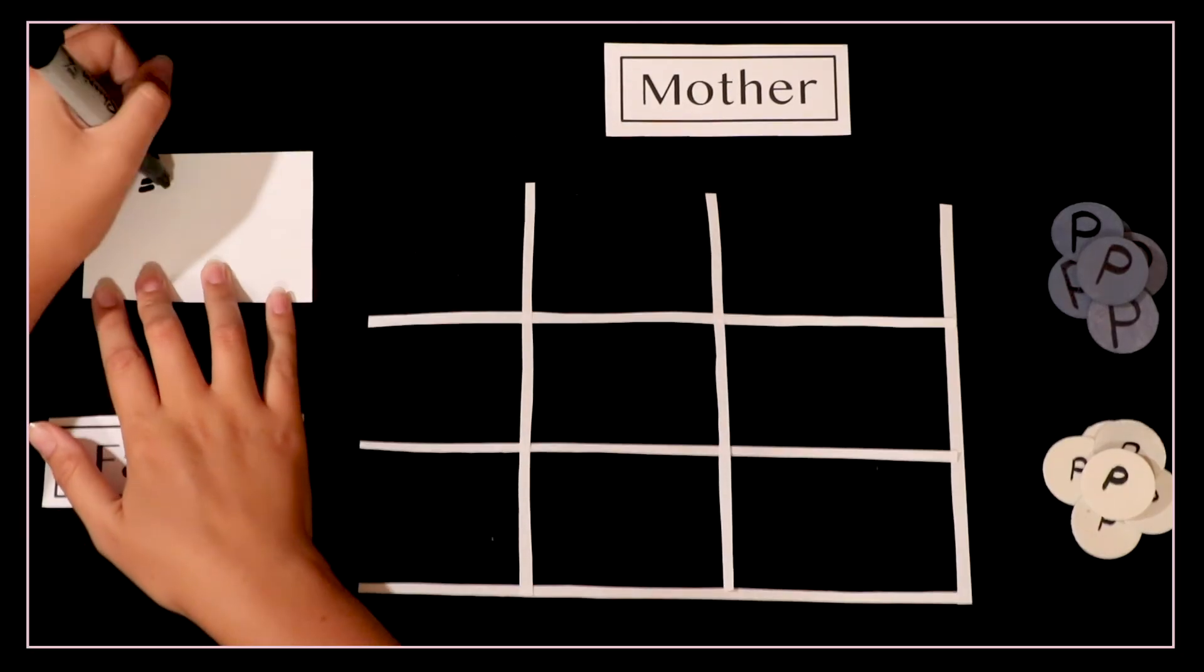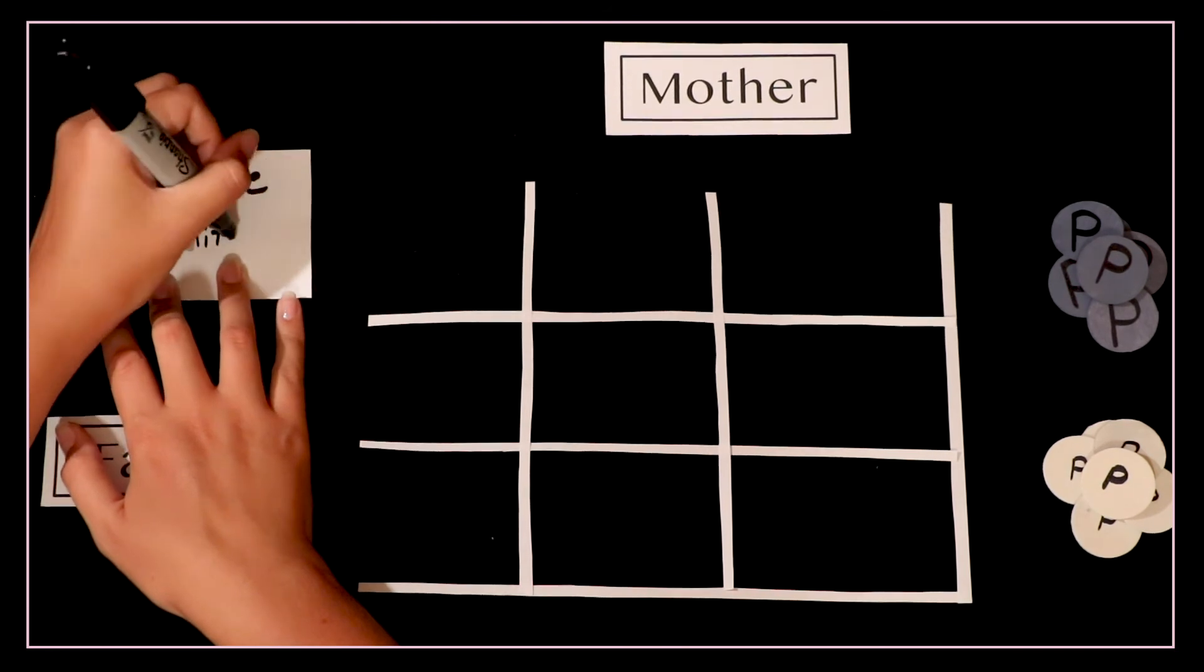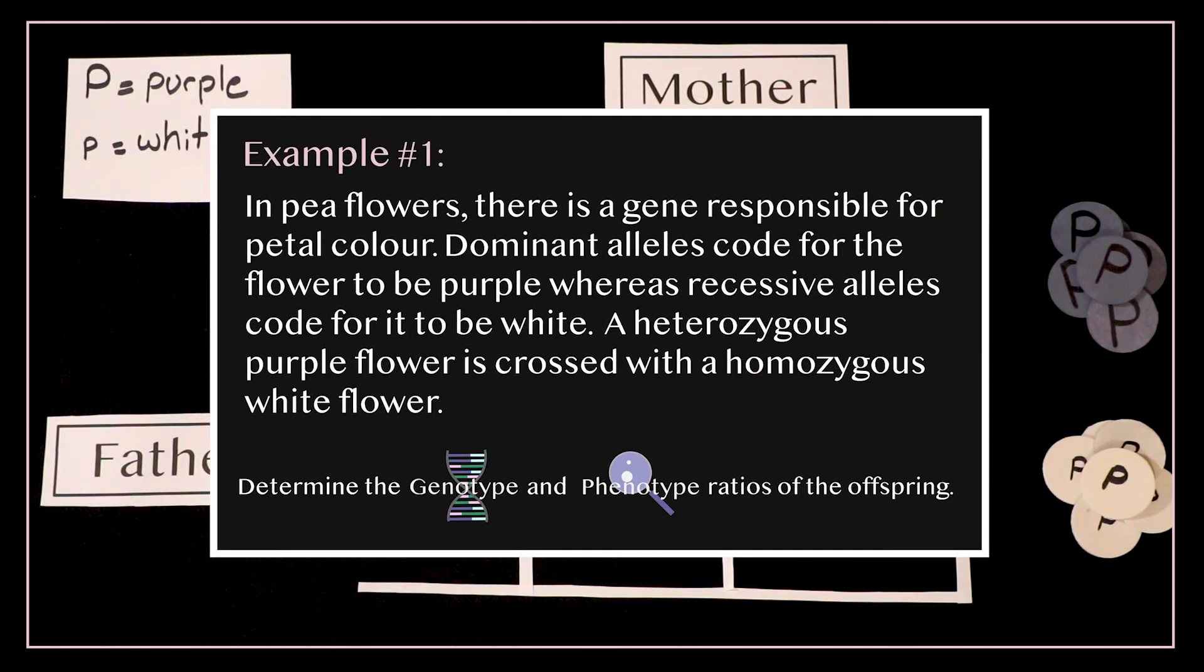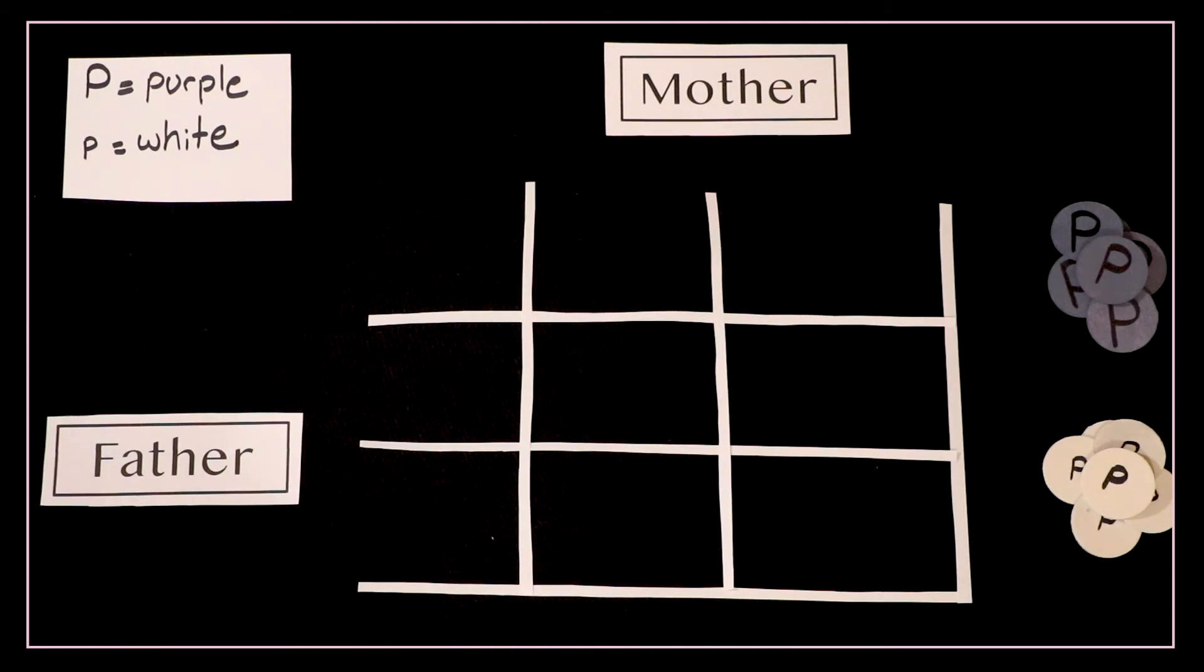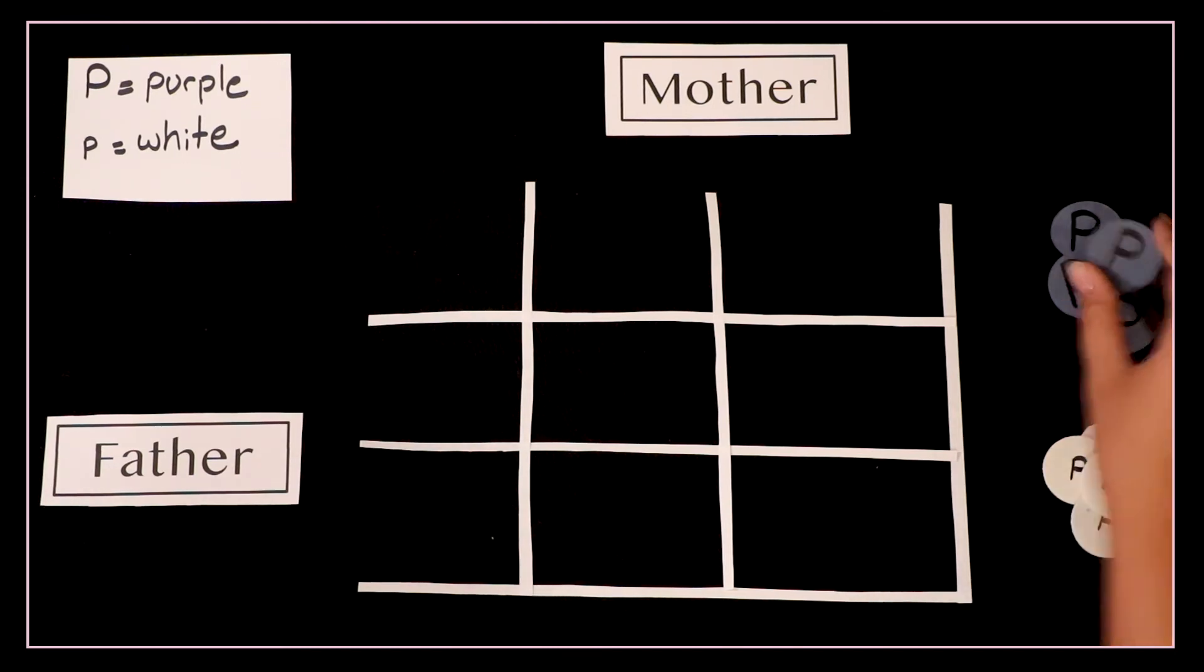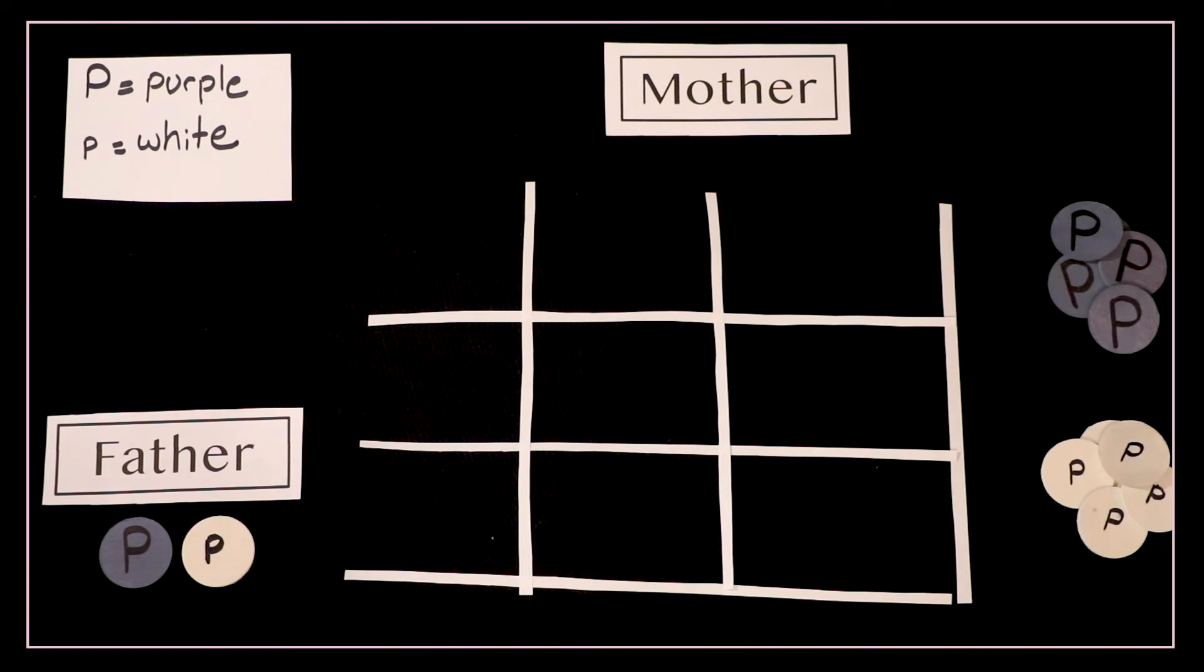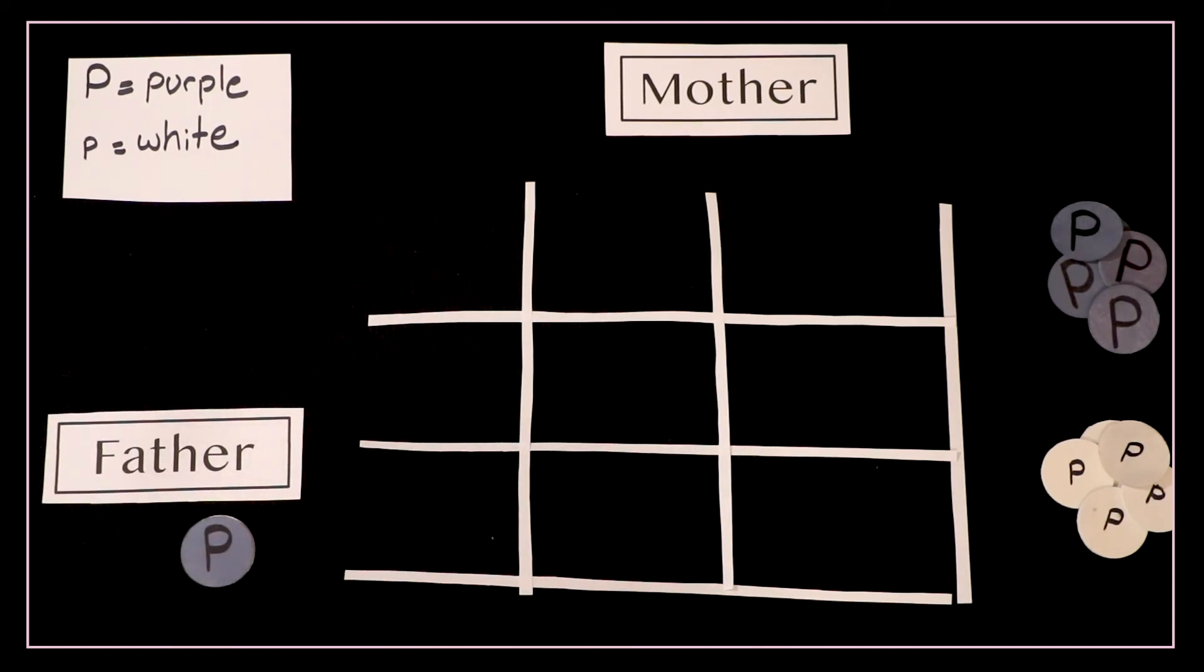First you write out the dominance. Capital P equals purple. Lowercase p equals white. Next let's look at the terms and figure out what two alleles the parents have. The first flower says heterozygous purple. Remember that heterozygous means different. This tells us they have one dominant and one recessive allele. To double check we do the phenotype test and sure enough the flower would look purple which matches with this question's description.